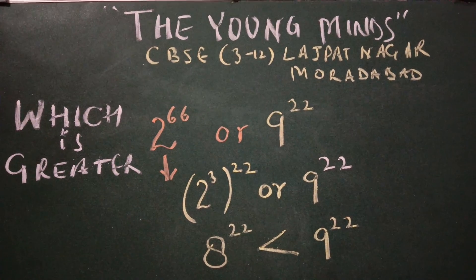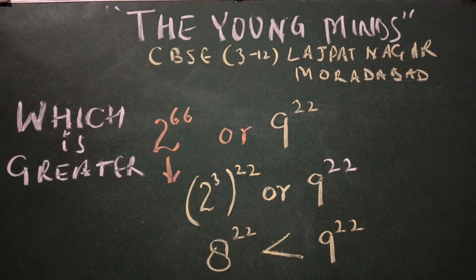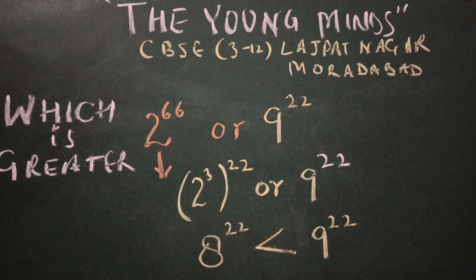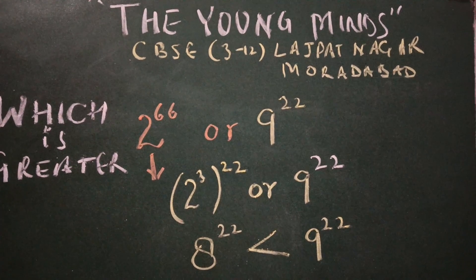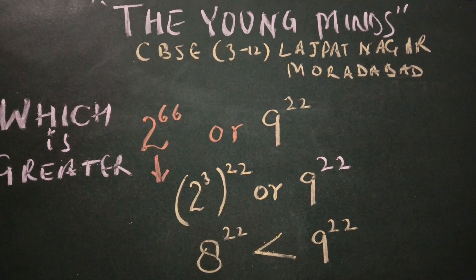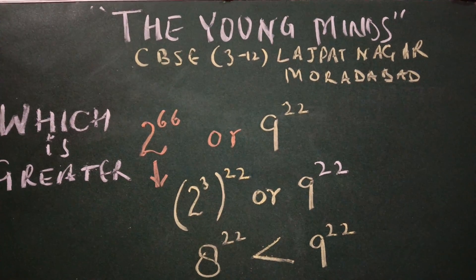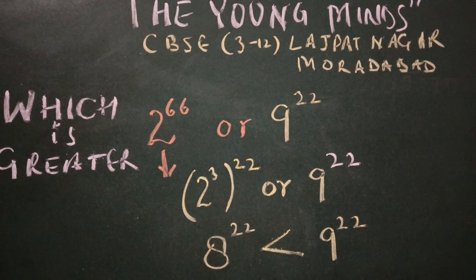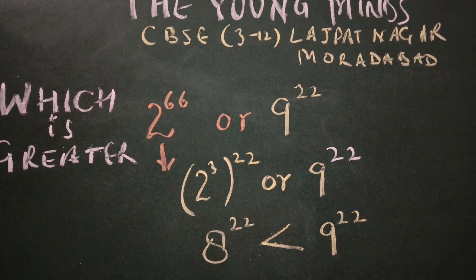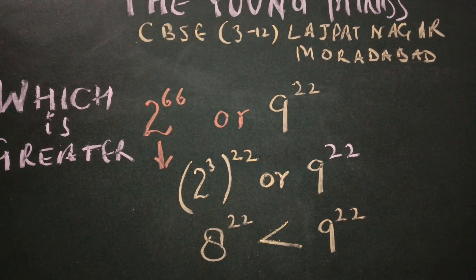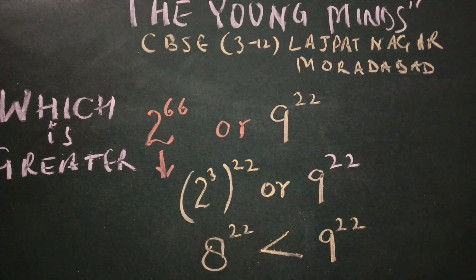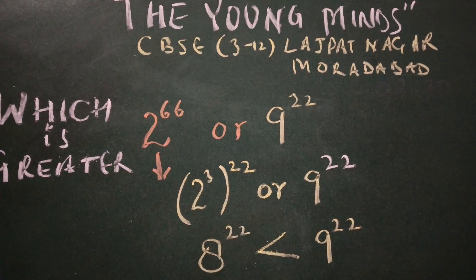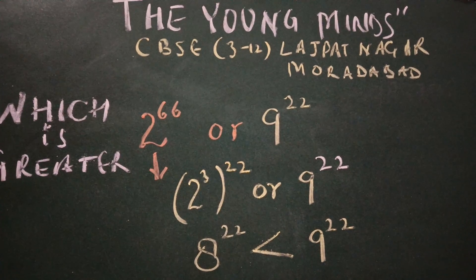So if you look in this question, here 2 raised to power 66 and here 9 raised to power 22. So we can write 2 raised to power 3 into 22, 66 we can break 2 raised to power 3 into 22.